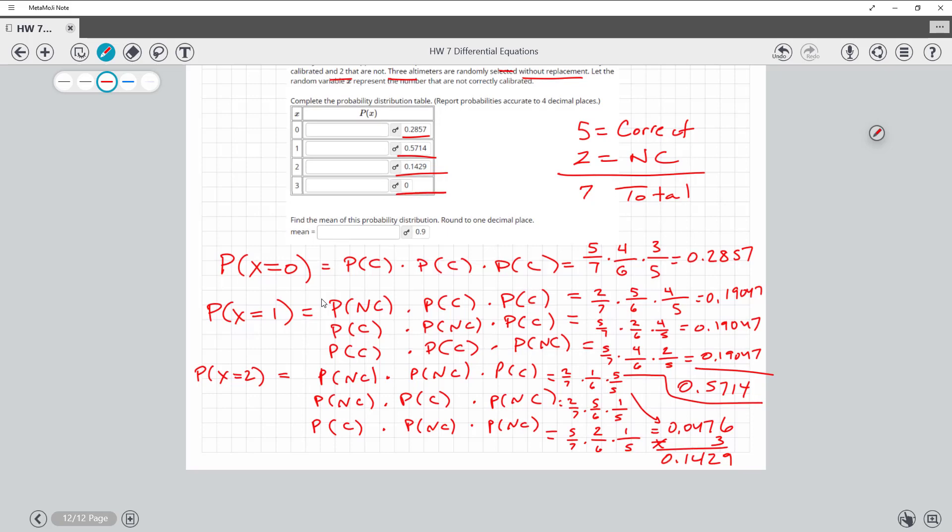Now, this last one, the reason why it's zero, the probability that they're all three are not correct. Well, there's only two that are not correct, so that's impossible to get all three being not correct.